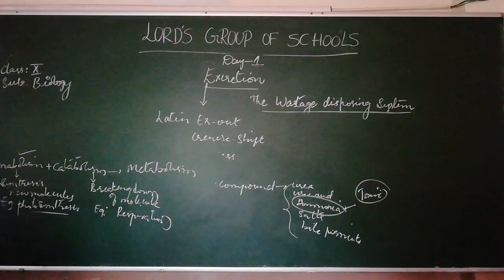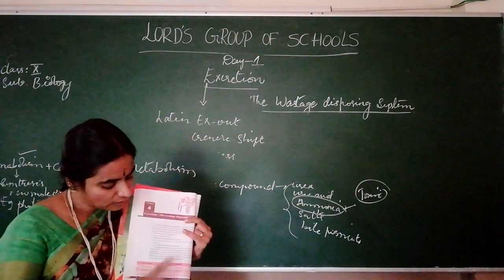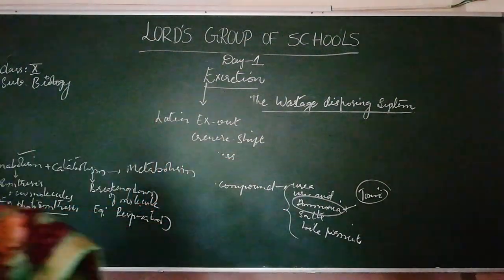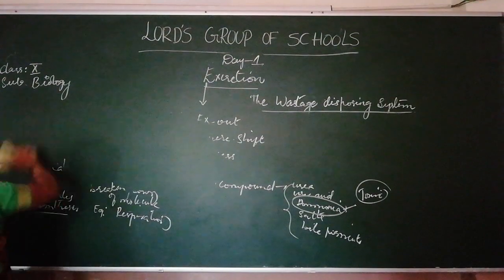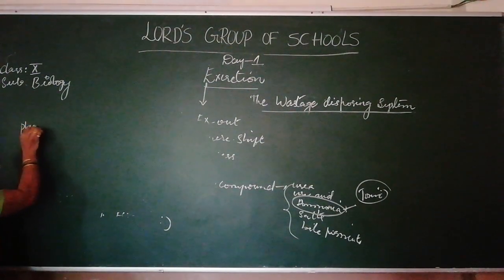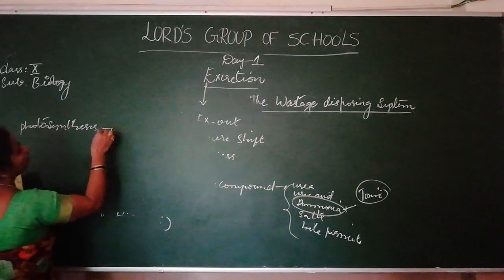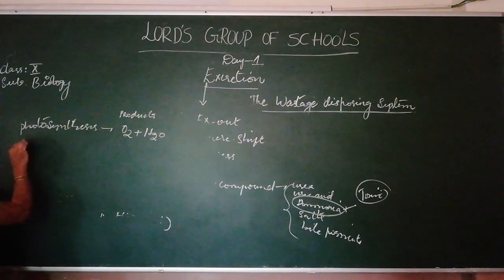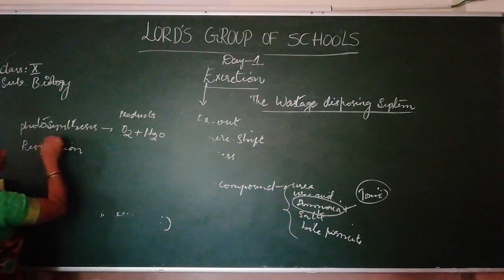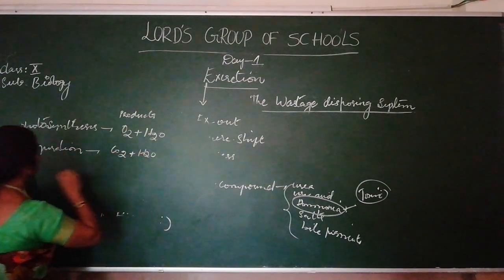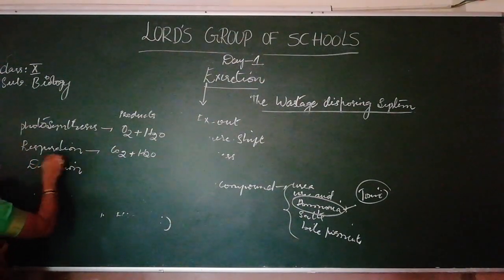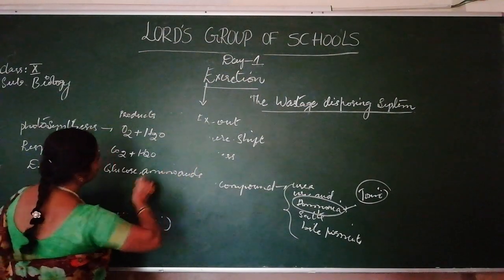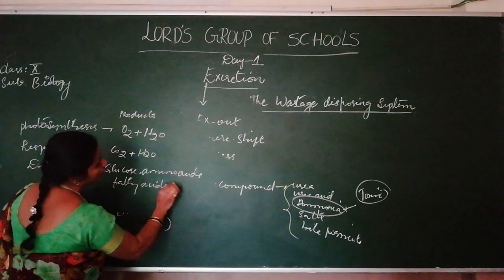In your textbooks on page number 74, there is a small table where you are asked to write the products of different life processes. The products of photosynthesis are oxygen and water. The products of respiration are carbon dioxide and water. The products of digestion are glucose, amino acids, and fatty acids.